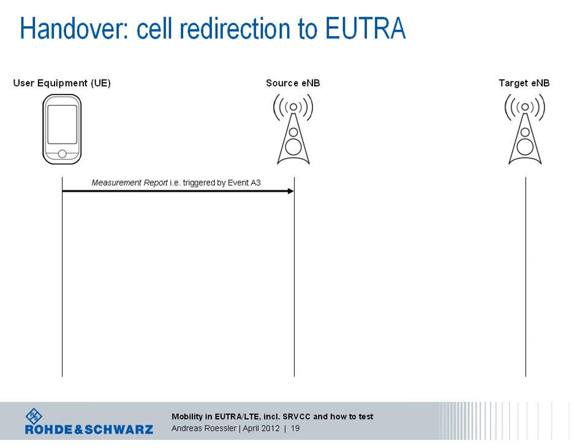With the reported information, the network is enabled to decide to initiate a handover cell redirection procedure. The UE provides a measurement report triggered by event A3 — that's basically the start of the handover procedure. The source eNodeB tasks one or more target cells to prepare for the handover, sending an RRC context including current RRC configuration, the UE capabilities, and radio resource management information.